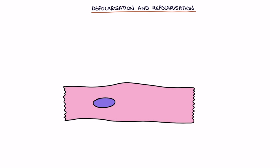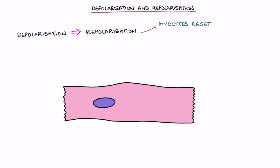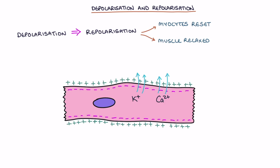Following depolarization there is a period of repolarization. Repolarization is where the muscle cells reset back to their resting state ready for another depolarization. The muscle is relaxed and potassium and calcium ions, which are both positively charged, are transported across the cell membrane to reset the membrane potential back to baseline.